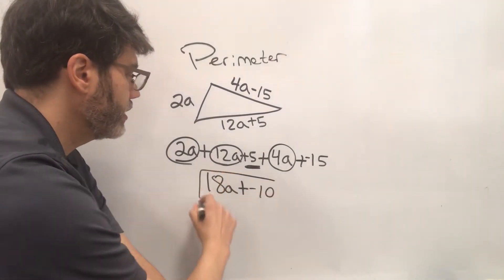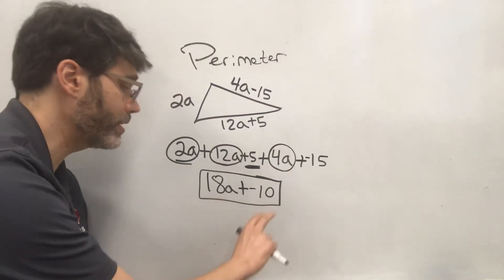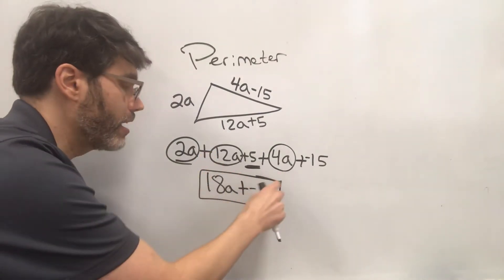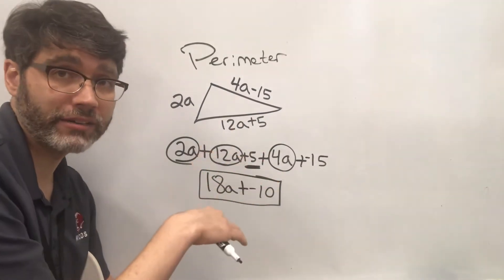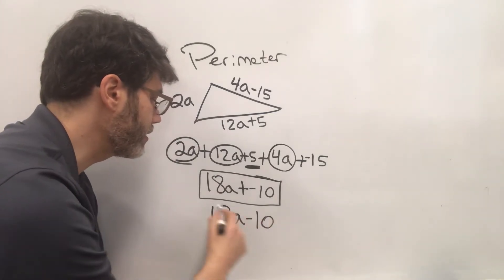And this is a perfectly good way to have our perimeter. Now, this is not the only way that we can express it. Remember, if you have a plus negative, we converted a subtraction sign into plus negative. If you want to, you can convert it back to a subtraction sign. So another way to put this is like this.